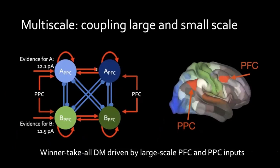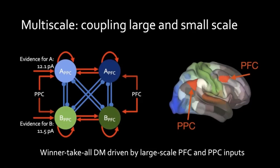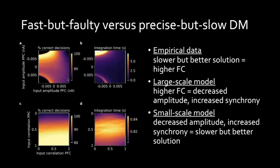We coupled the large-scale network with a small winner-take-all decision-making circuit. This circuit has populations A and B connected with excitatory connections — red arrows — that mutually inhibit each other with blue arrows. If there comes more evidence for option A, it inhibits option B, and vice versa — with this mechanism decisions can be formed. We analyzed how this circuit behaves when injected with the kind of activity learned in the large-scale model: the slower subjects had higher FC, and in our model higher FC leads to decreased amplitude of input currents but increased synchrony.